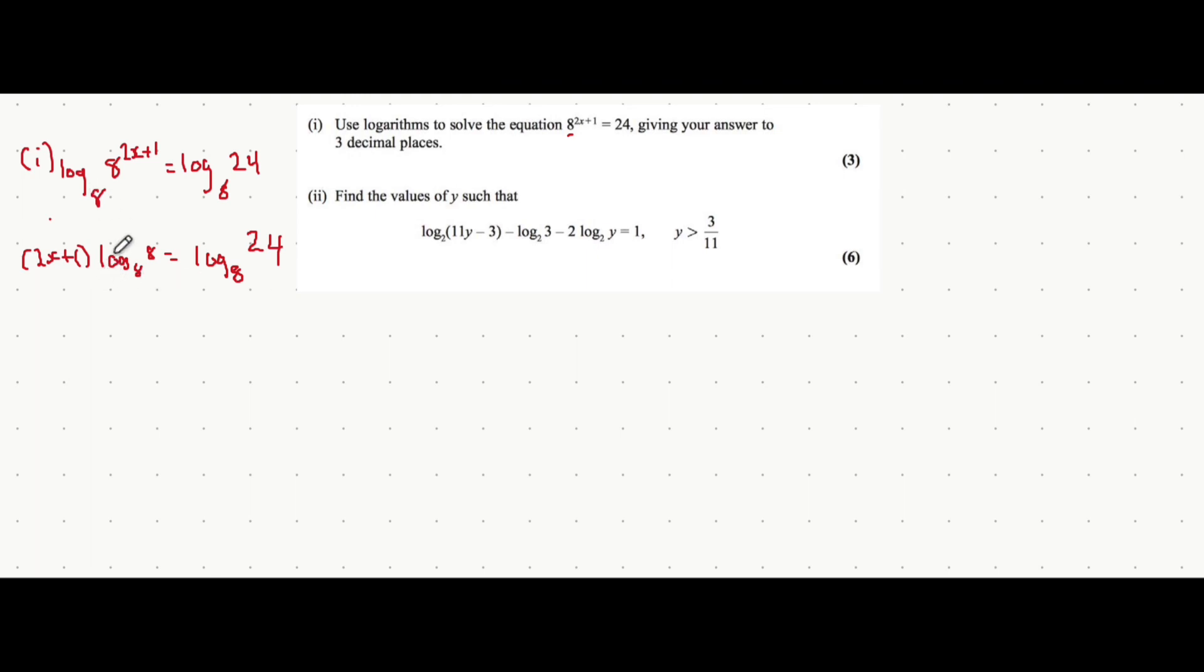Now, the reason I chose log base 8 is because log base 8 of 8 is just 1, meaning 2x plus 1 all multiplied by 1, which is just 2x plus 1, would be equal to all of this. So log base 8 of 24.